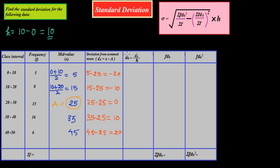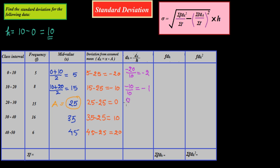Now, since the class width H is 10, we find DH = DA / H. So: negative 20 divided by 10 is negative 2, negative 10 divided by 10 is negative 1, 0 divided by 10 is 0, 10 divided by 10 is positive 1, and 20 divided by 10 is positive 2. We have now obtained all DH values.